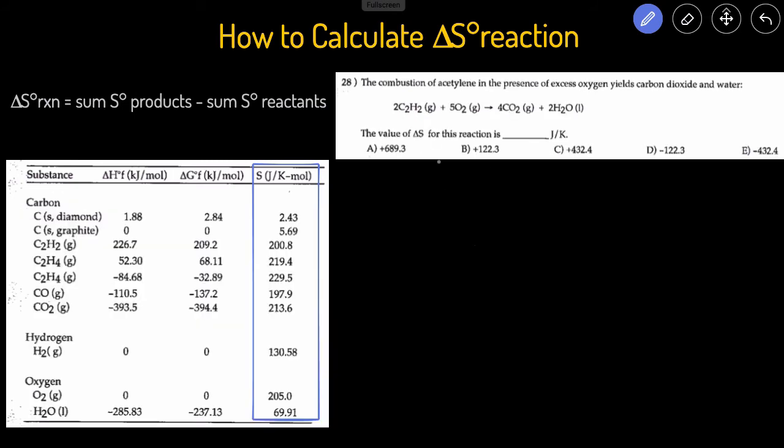So this next one is pretty similar to the last one. We have a balanced chemical reaction as indicated by the coefficients, and we have to calculate the delta S. And we have the values of the products and reactants. So once again, let's just do sum of products minus sum of reactants.